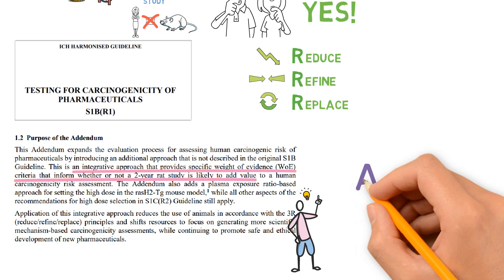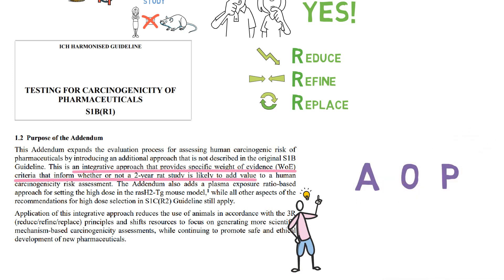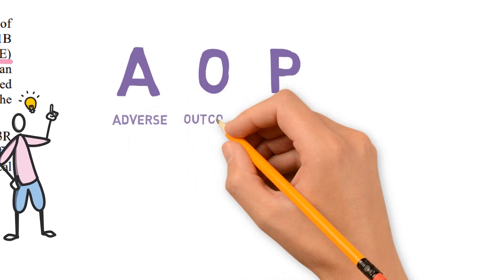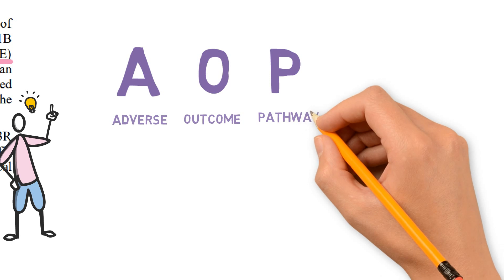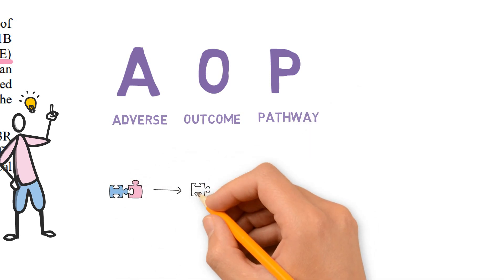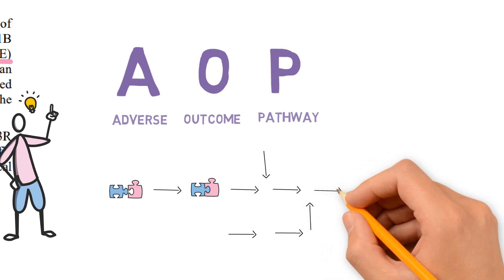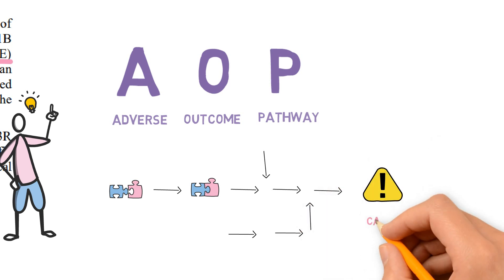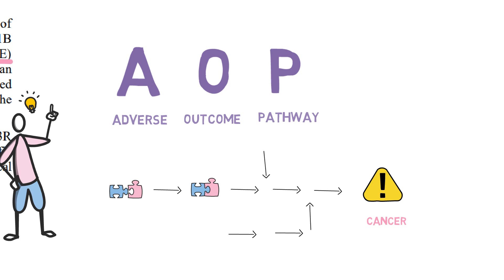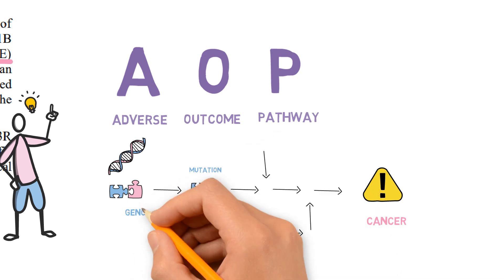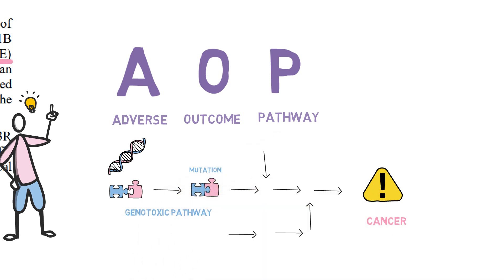This sounds like a brilliant idea, but how would it work in practice? An effective way to achieve this is by the use of AOPs — adverse outcome pathways. An AOP represents the cascade of molecular events that happen in our body leading to a disease or adverse outcome, such as cancer. We know there are different ways a chemical can lead to cancer — for example, it could react with DNA, cause mutations, and lead to cancer through a genotoxic pathway.